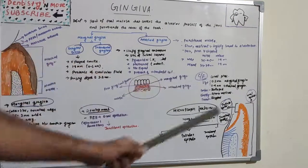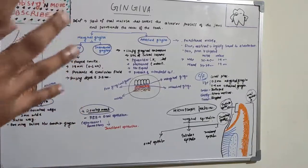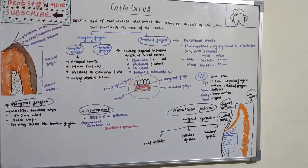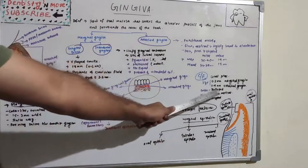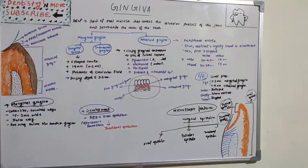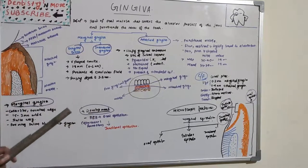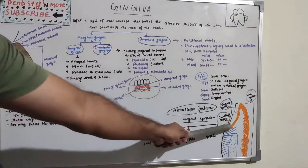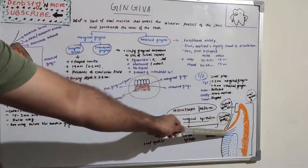The clinical features: the basic color is coral pink — the pink color seen in coral reefs, which is why it has that particular name. The size is 0 to 2 mm for marginal gingiva and 0 to 9 mm for attached gingiva. Contour is scalloped, firm and resilient consistency, and stippled texture. The gingiva develops when oral epithelium joins with reduced enamel epithelium, which becomes junctional epithelium.